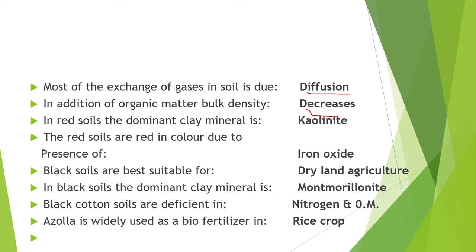Next point is, with the addition of organic matter, bulk density decreases. Next point is, in red soil, kaolin is the dominant clay mineral. The red color of red soil is due to the presence of iron oxide. Next point is, black soil is best suitable for dry land agriculture, and in black soil, the dominant clay mineral is montmorillonite.